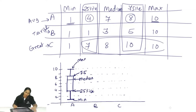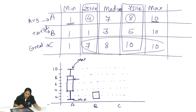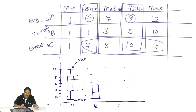Now let us draw the box for B — a terrible movie. B's median is fairly low at 3. B's 25th percentile is at 1, and B's 75th percentile is 5. B's minimum is also at 1, so there is no length for the bottom whisker. B's maximum is 10, so the top whisker extends there. This is the box and whiskers plot for the terrible movie B.